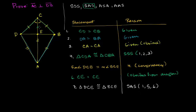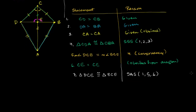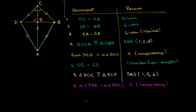Since these triangles are congruent, all corresponding angles are congruent. Statement 8: the measure of angle DEC equals the measure of angle BEC — this comes straight from statement 7. Statement 9: angle DEC and angle BEC are supplementary, meaning their measures add up to 180 degrees.